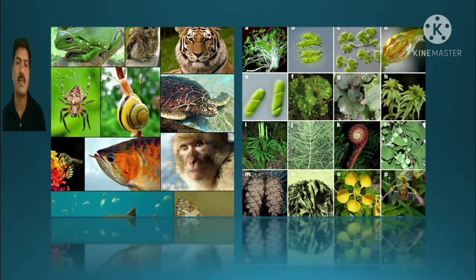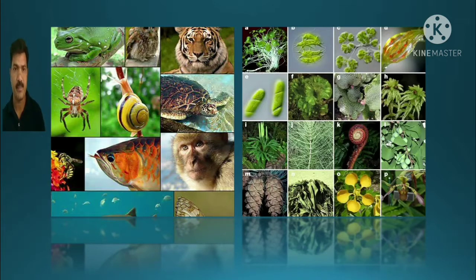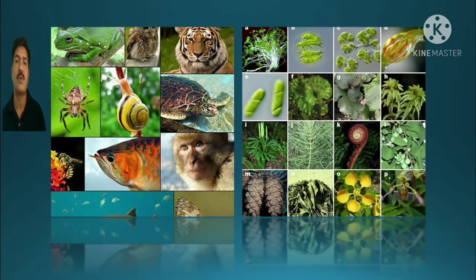Wherever we look, we see life science. We discussed different types of animals, different types of plants — microscopic to macroscopic, unicellular to multicellular. The variety of animals is what we call biodiversity.